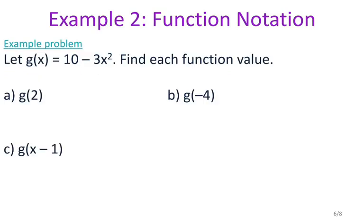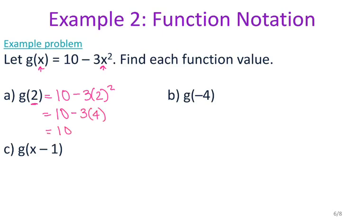Now let's actually work with function notation. For the first one, I have g of x equals 10 minus 3x squared, and I want to find each function value. For g of 2, my input is a 2, so I'm going to plug in 2 for x. When I do that, that gives me 10 minus 3 times 4, which is 10 minus 12, or negative 2.